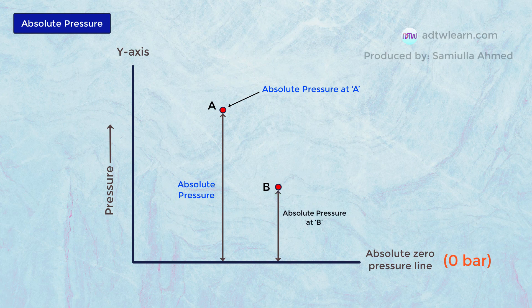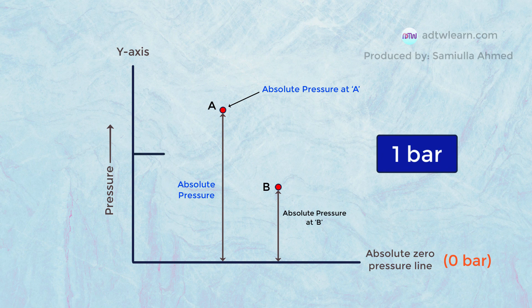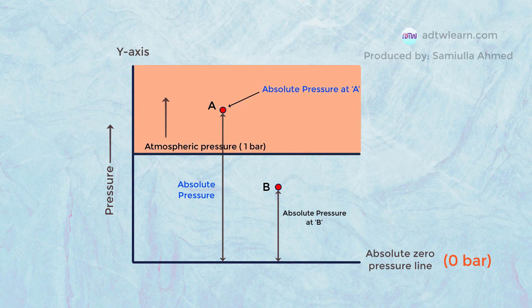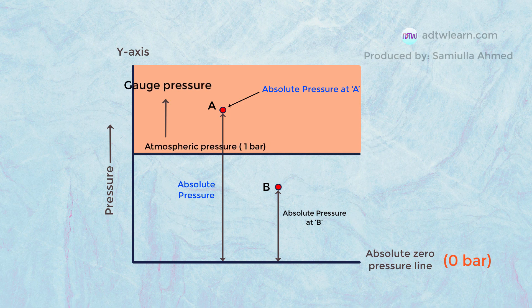Normally, the pressure around us in the atmosphere is around one bar. This line represents atmospheric pressure. And if we measure any pressures above this atmospheric line, that pressure will be called gauge pressure. This is because the gauges that are used to measure the pressure measure from the atmospheric pressure. Therefore, the pressure measured above this atmospheric pressure line is called gauge pressure.